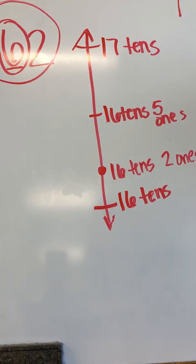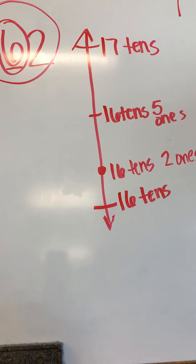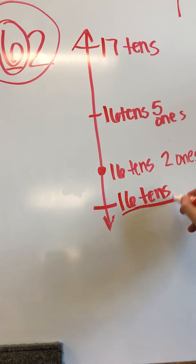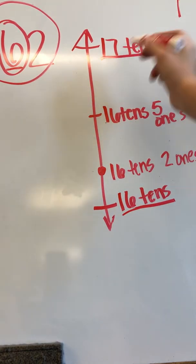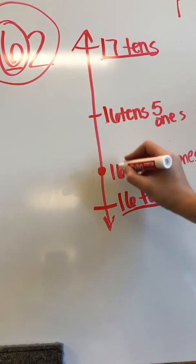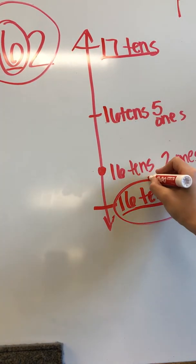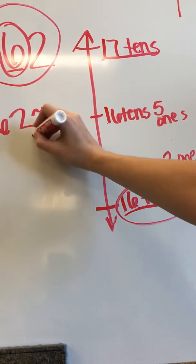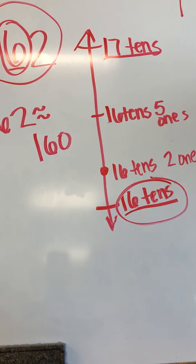So now that I have this all plotted, I can finally figure out what 162 would round to. Is it going to round to 16 tens or is it going to round to 17 tens? Well it is much closer to 16 tens than it is to 17 tens. So I'm going to say that 162 rounds to 16 tens. So I can say 162 is about the same as 160.